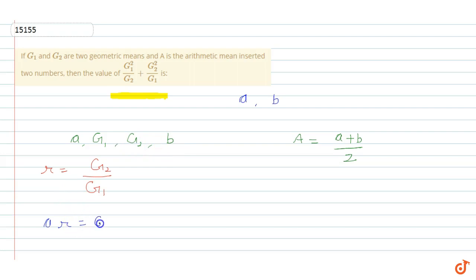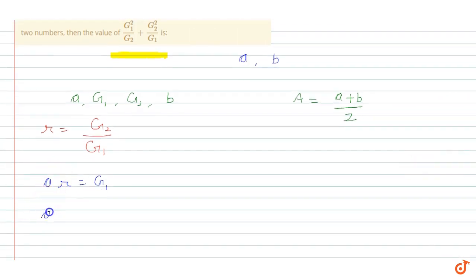So a into r is equal to g1, and r's value is g2 by g1. So a's value will be a is equal to g1 square by g2.